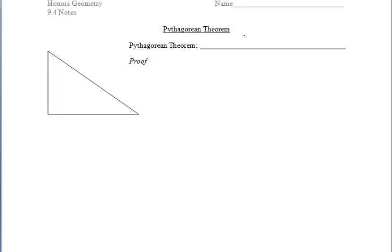We are going to prove that the square of the measure of the hypotenuse of a right triangle is equal to the sum of the squares of the measures of the legs.